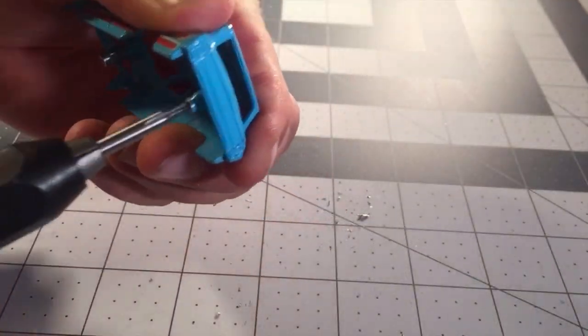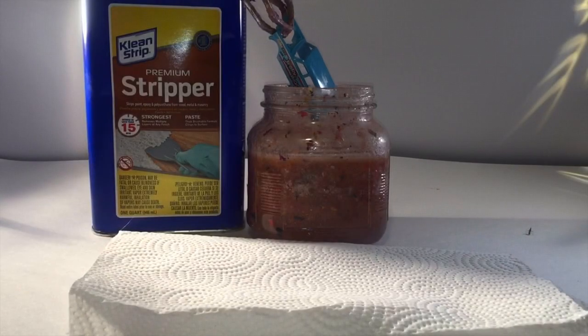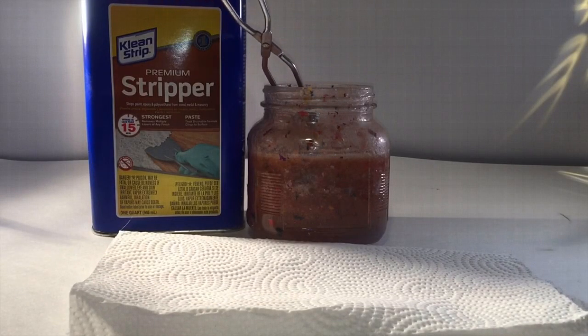Then we're going to tap it with a 2-56 tap. Now it's time to strip. Where'd that bug come from?